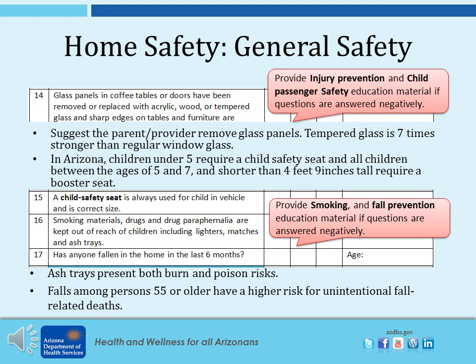The next questions are about glass panels, child safety seats, smoking materials, and falls. Suggest the parent remove glass panels — tempered glass is 7 times stronger than regular window glass. In Arizona, children under 5 require a child safety seat, and all children between the ages of 5 and 7 and shorter than 4 feet 9 inches tall require a booster seat. Ashtrays present both burn and poison risks, and falls among persons 55 and older have a higher risk for unintentional fall-related deaths.